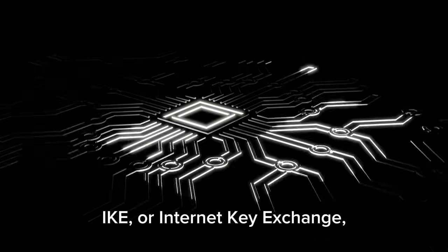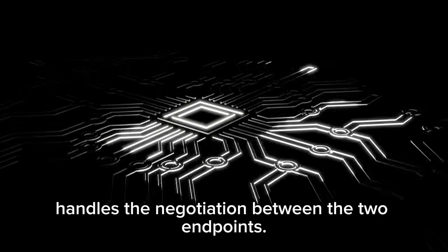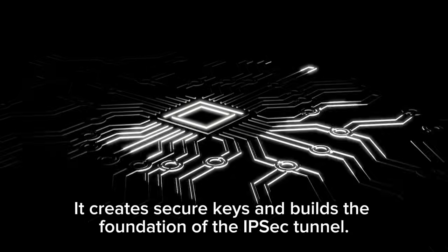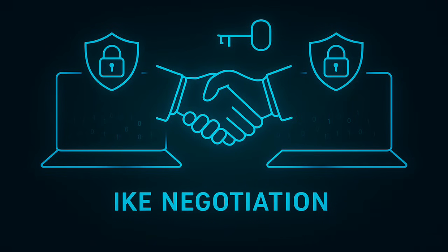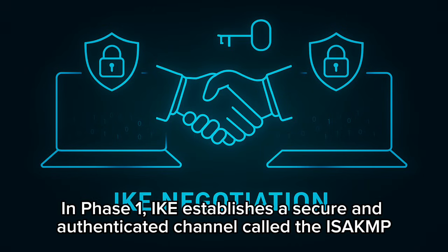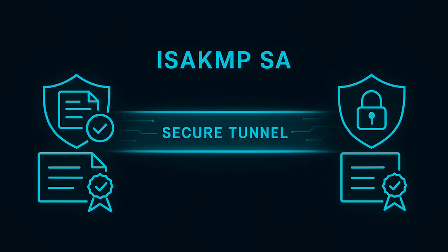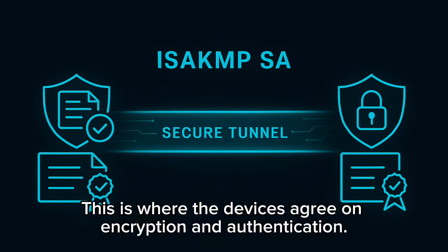IKE, or Internet Key Exchange, handles the negotiation between the two endpoints. It creates secure keys and builds the foundation of the IPsec tunnel. In Phase 1, IKE establishes a secure and authenticated channel called the ISAKMP Security Association. This is where the devices agree on encryption and authentication.